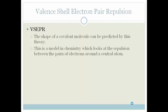And why is this important? Well, the shape of a covalent molecule can be predicted by this theory. It's a model in chemistry which looks at the repulsion between pairs of electrons around a central atom, and that helps us predict the shape of a covalent molecule.